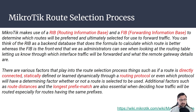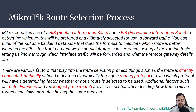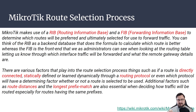Route distances and longest prefix match are also important. A route distance means a route with the lowest distance value is the route that would be preferred — the smaller the number, the better. Other vendors like Cisco and Juniper call this the administrative distance. It's essentially the route that is the least furthest away — that's the route it's going to take to get to the destination.